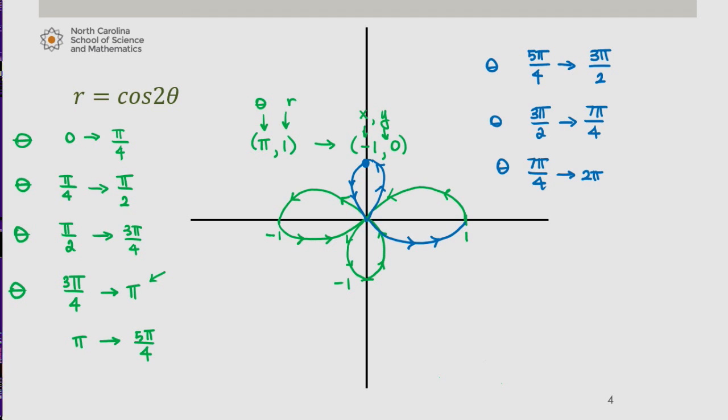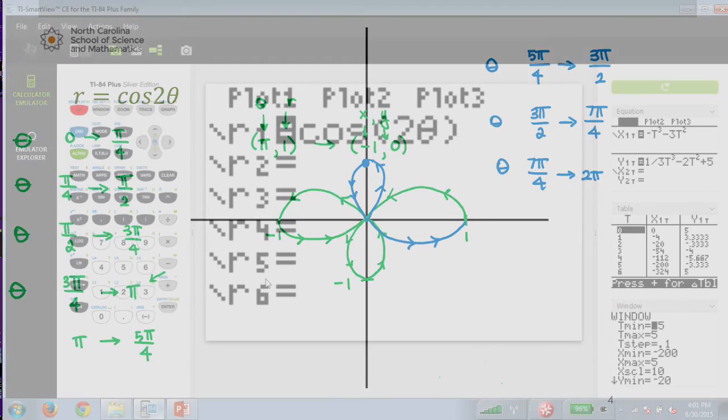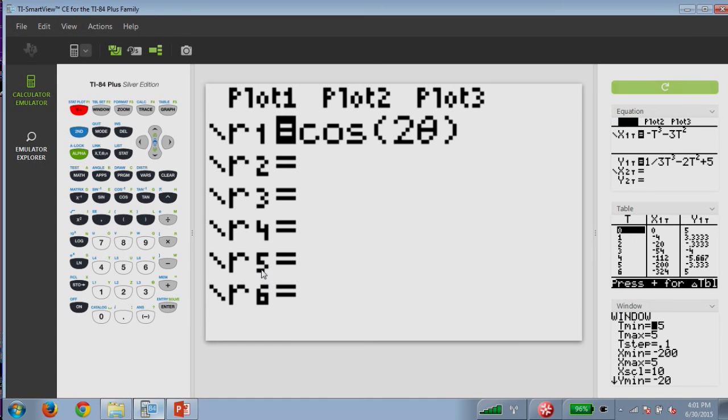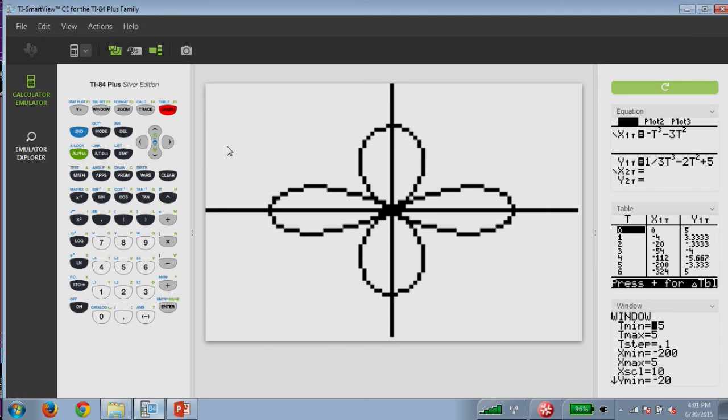And this curve is actually called a 4-petal rose. Let's confirm this graph using our calculator. And here we have cosine of 2 theta in our calculator. And we'll graph it. And there's our 4-petal rose.